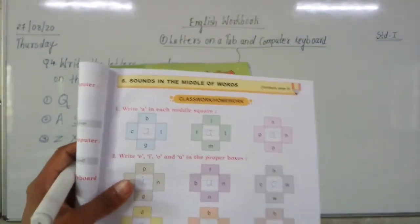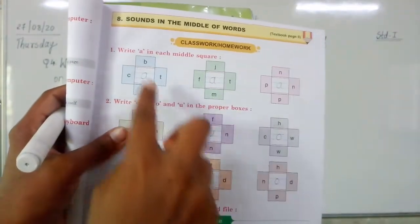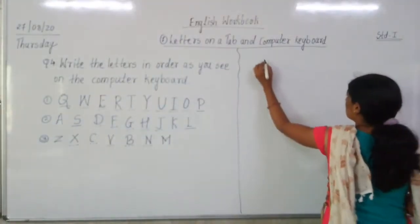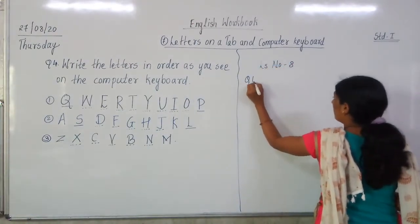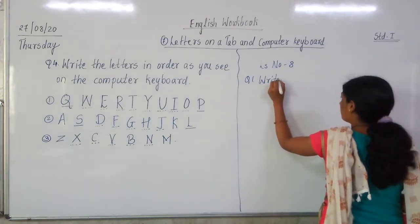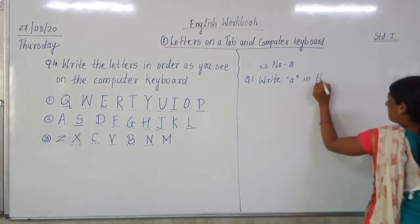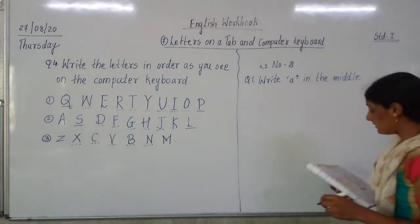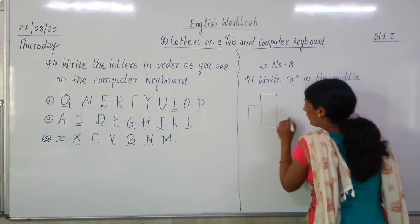After that is Lesson number 8: 'Sounds in the Middle of Words.' The first question given is: Write A in each middle square. There are some squares given. Question number 1: Write A in the middle. The first example given in the English workbook has letters B, T, G, C.